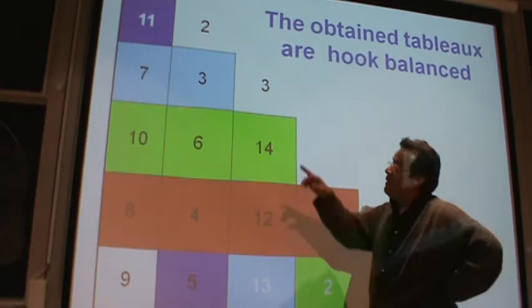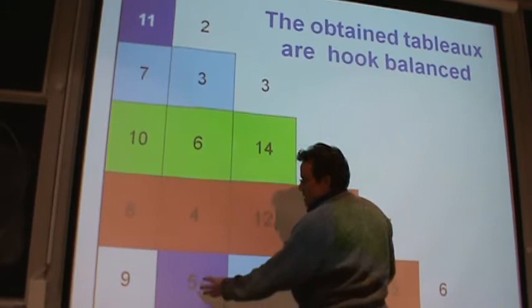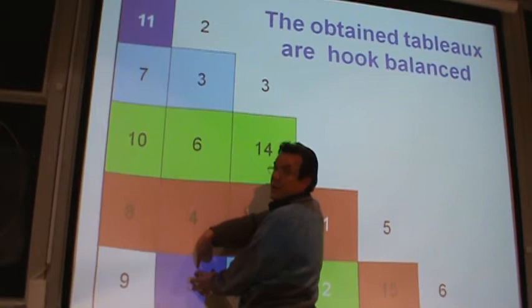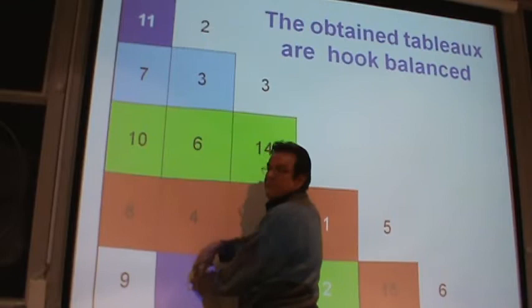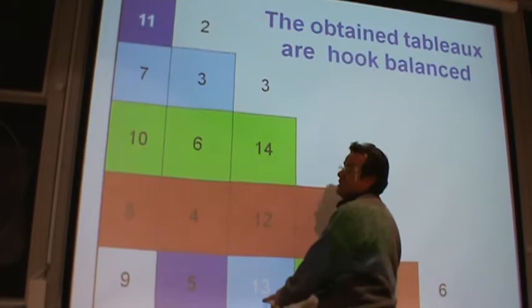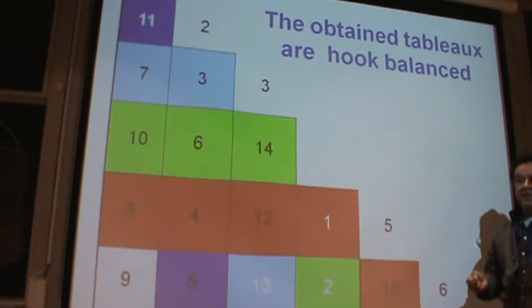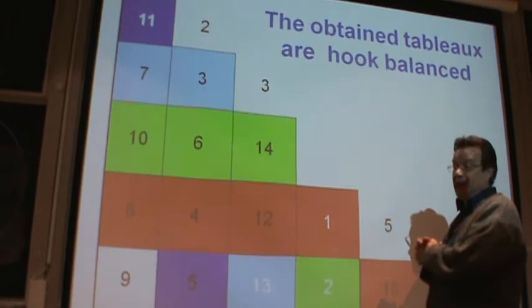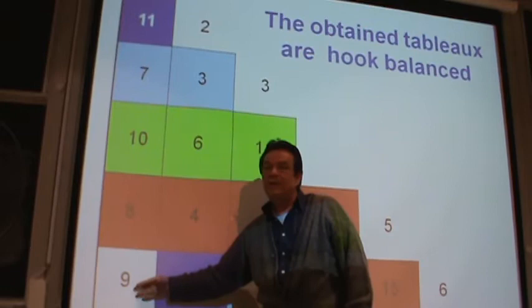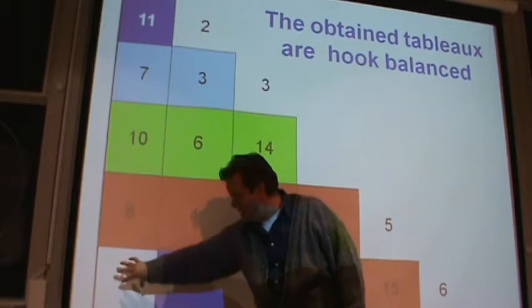Now we are going to consider the hook for this entry. I have painted this entry and the other entries of the same color. The name of the game is that each entry has a partner. For every hook, you can do this partner pairing because the two arms have the same length by definition. Now you look at the values and compare them with respect to the most important box in that hook — the corner.